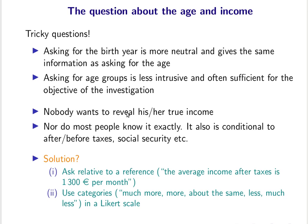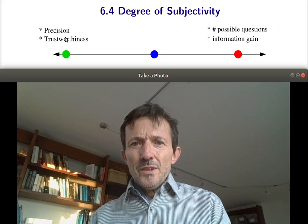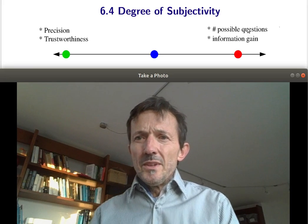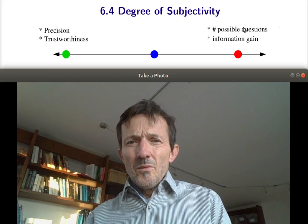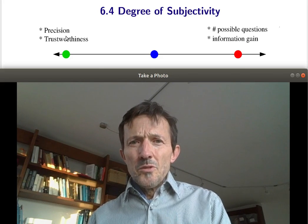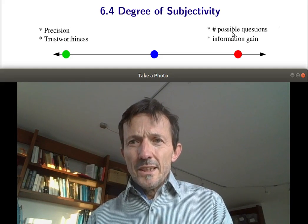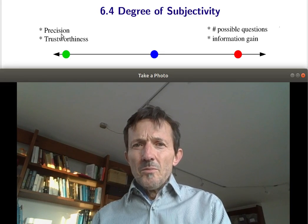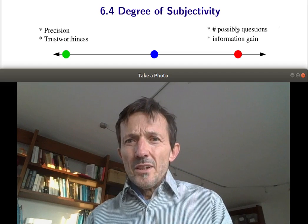Now we come to some examples ordered by degree of subjectivity. There is a trade-off between precision and trustworthiness of your results, what you can ask, and the information you obtain. This is analogous to the significance level: if you choose a very low level like one percent, you get highly trustworthy statements, but often you get no statements at all because it's very hard to reject the null hypothesis with a very small alpha.